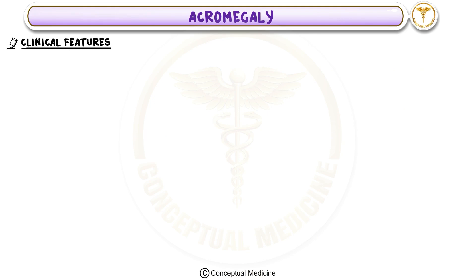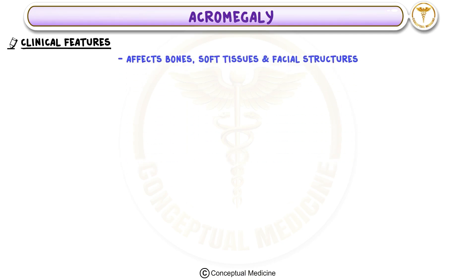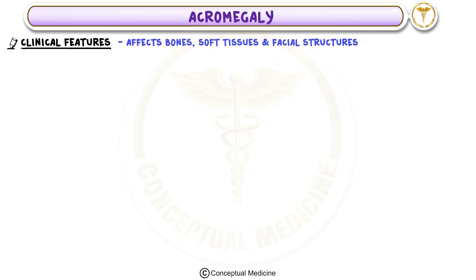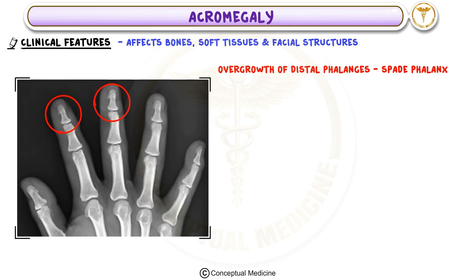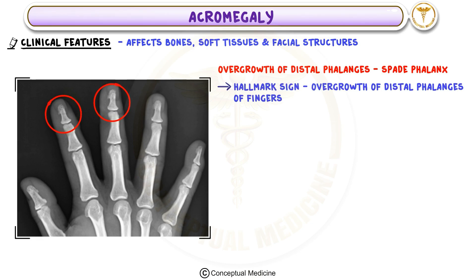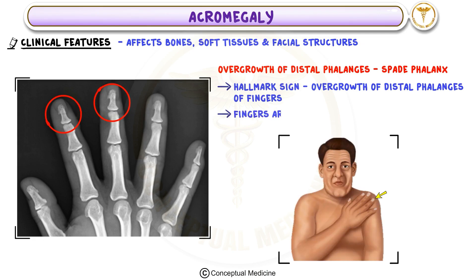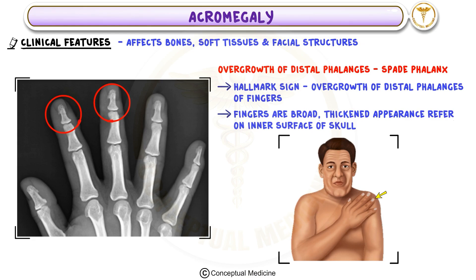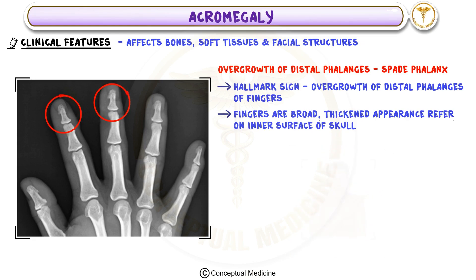Acromegaly primarily affects bones, soft tissues, and facial structures. One hallmark sign is the overgrowth of the distal phalanges of the fingers, giving them a broad, thickened appearance often referred to as a spade phalanx, because they resemble the shape of a spade.